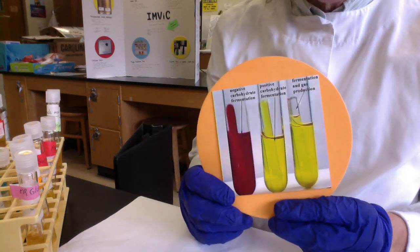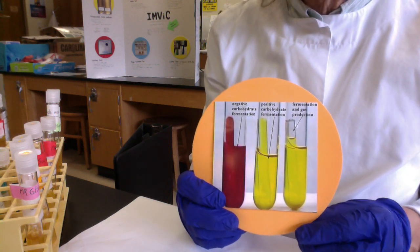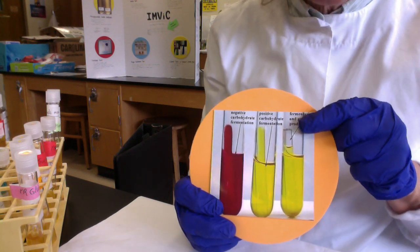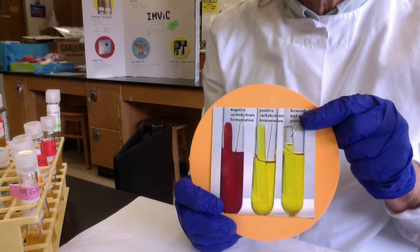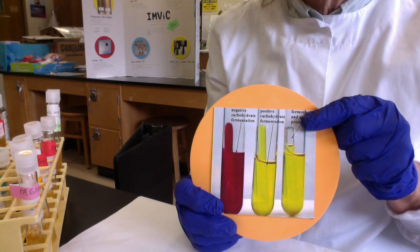In the PR sugar fermentation media is an inverted glass tube called a Durham tube. Its job is to collect gas produced during fermentation of the sugars—molecular hydrogen, CO2, or both.